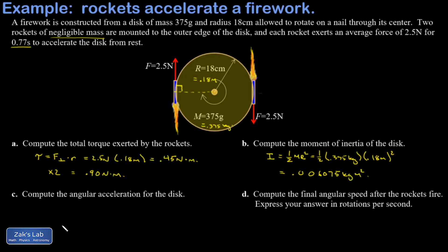In part C, I want the angular acceleration for the disc. I have the total torque on it, which is like the twisting force, and I have the moment of inertia, which is the resistance to the angular acceleration. Now I can get my angular acceleration from the formula tau equals I alpha.